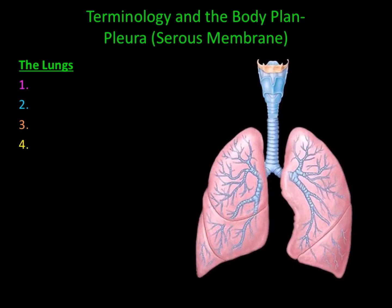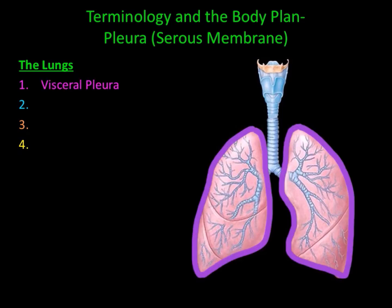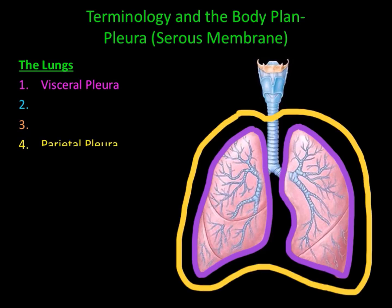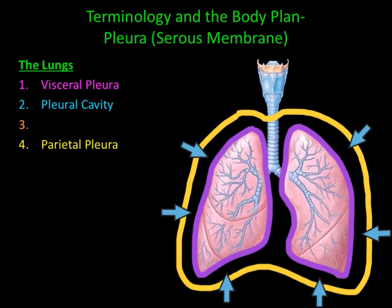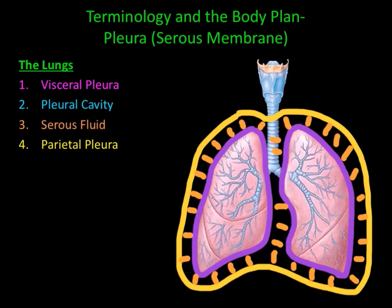The membrane surrounding the lungs is called the pleura, and it also has four parts. The visceral pleura attaches directly to the lungs. The parietal pleura is the outermost membrane. In between them is the pleural cavity, and within the pleural cavity you have pleural fluid.